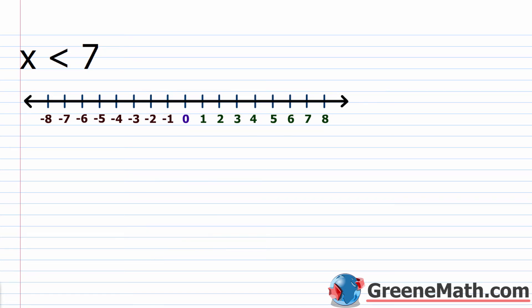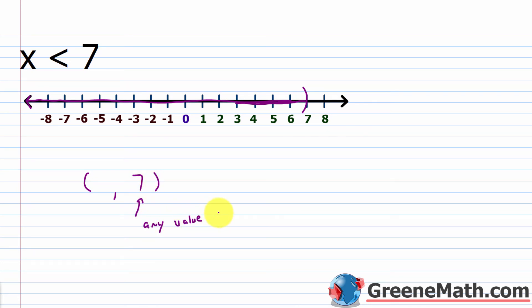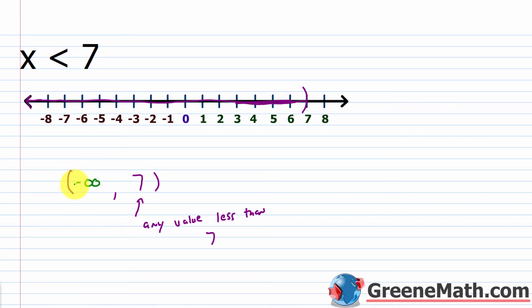For x is less than 7: graphically, place a parenthesis at 7 facing left and shade everything to the left. In interval notation, this is any value less than 7, so 7 is not included — use a parenthesis next to 7. Going in the other direction, the solution continues forever in the negative direction, so we use negative infinity. We always use a parenthesis with infinity or negative infinity because infinity is a concept, not a number you can ever reach.